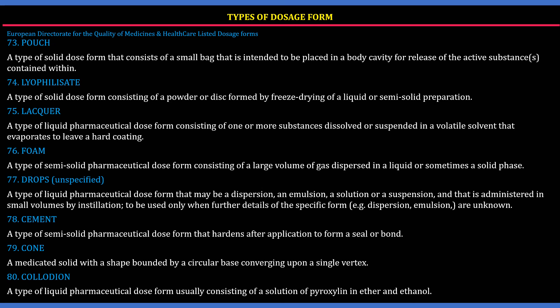77. Drops: A type of liquid dosage form that may be a dispersion, emulsion, solution, or suspension, administered in small volumes by instillation. 78. Cement: A type of semi-solid dosage form that hardens after application to form a seal or bond. 80. Collodion: A type of liquid pharmaceutical dose form which usually consists of a solution of pyroxylene in ether and ethanol.